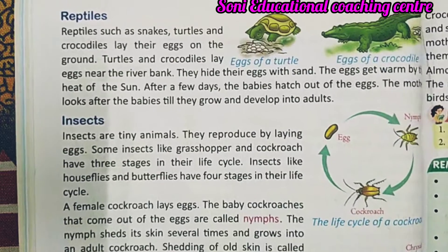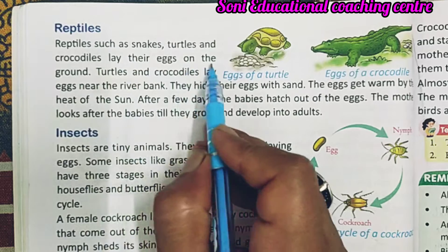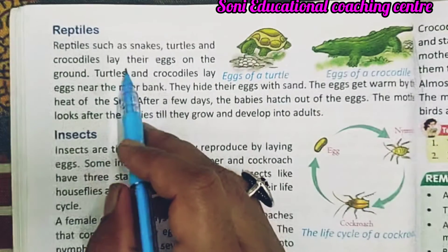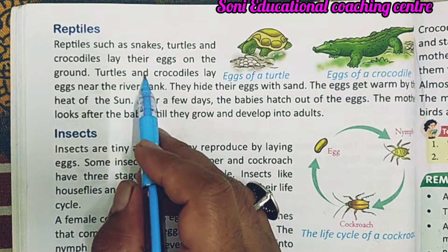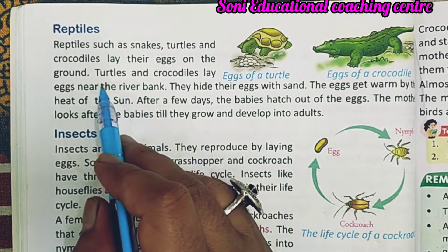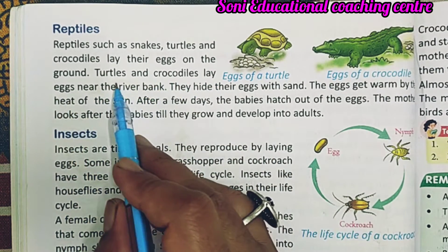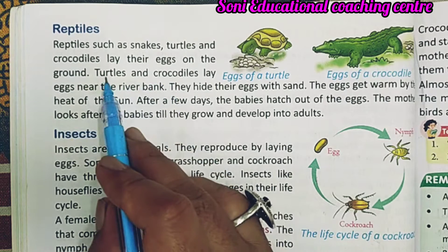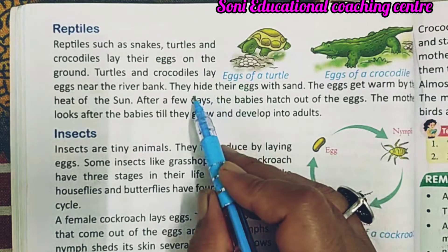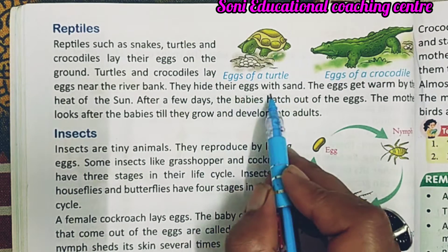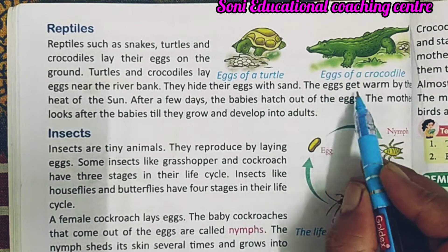Reptiles such as snakes, turtles, and crocodiles lay their eggs on the ground. जो reptile होते हैं — सांप, कछुआ, crocodile — ये अपने अंडे जमीन पर देते हैं। Turtles and crocodiles lay eggs near the river bank and hide them with sand — वे अपने अंडों को मिट्टी से ढक देते हैं।